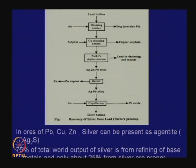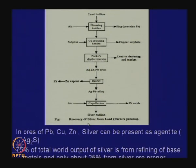Similarly, in the case of silver, there are silver ores and some 25 percent of silver is obtained from silver ore proper, but 75 percent of silver comes from the processing of base metals, mainly processing of lead, because lead ores contain silver as Ag₂S.